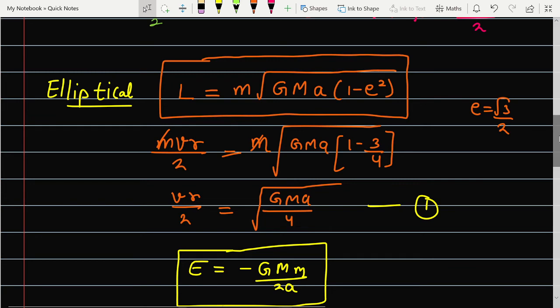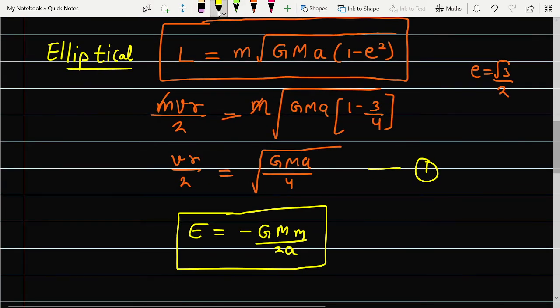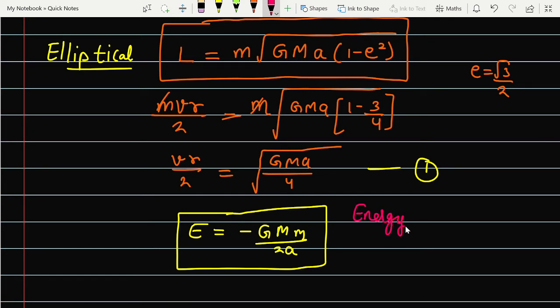It is only depending on the semi-major axis. Remember this concept too, that the elliptical orbit energy is only depending on the semi-major axis, meaning there is no dependency on the minor axis. This is minus GMm upon 2a.